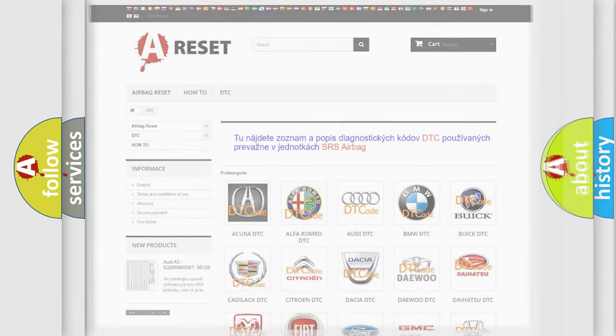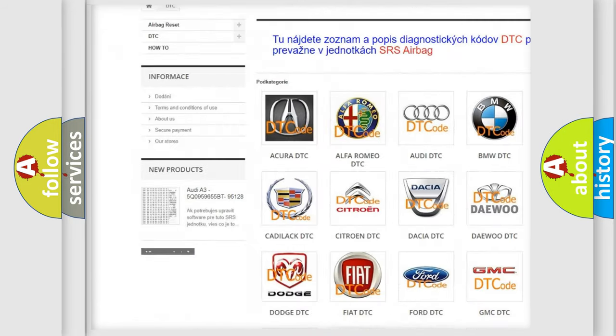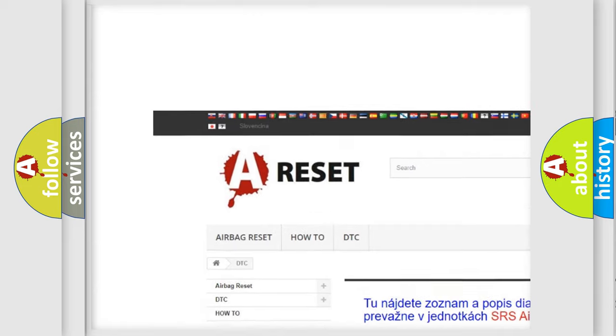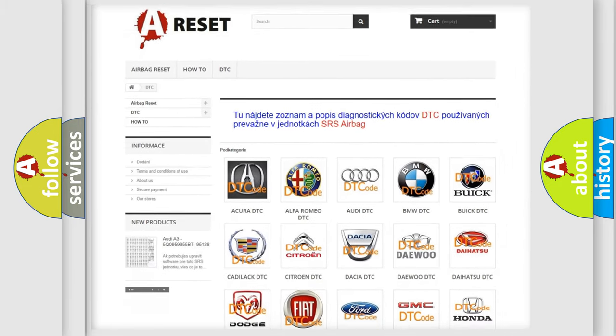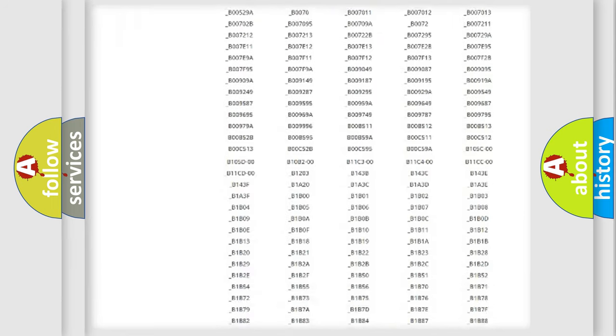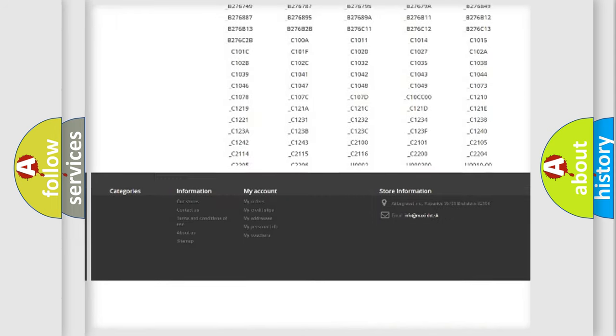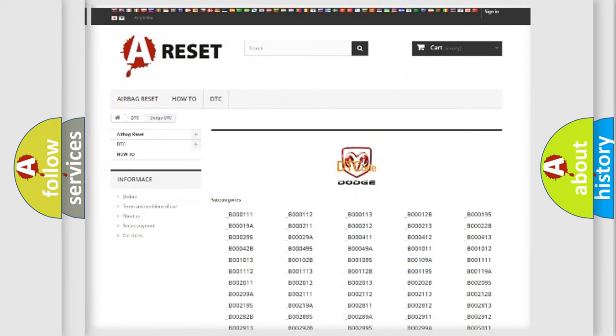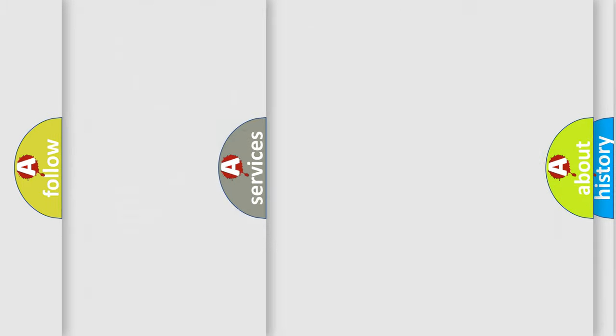Our website airbagreset.sk produces useful videos for you. You do not have to go through the OBD2 protocol anymore to know how to troubleshoot any car breakdown. You will find all the diagnostic codes that can be diagnosed in Dodge vehicles, and many other useful things.